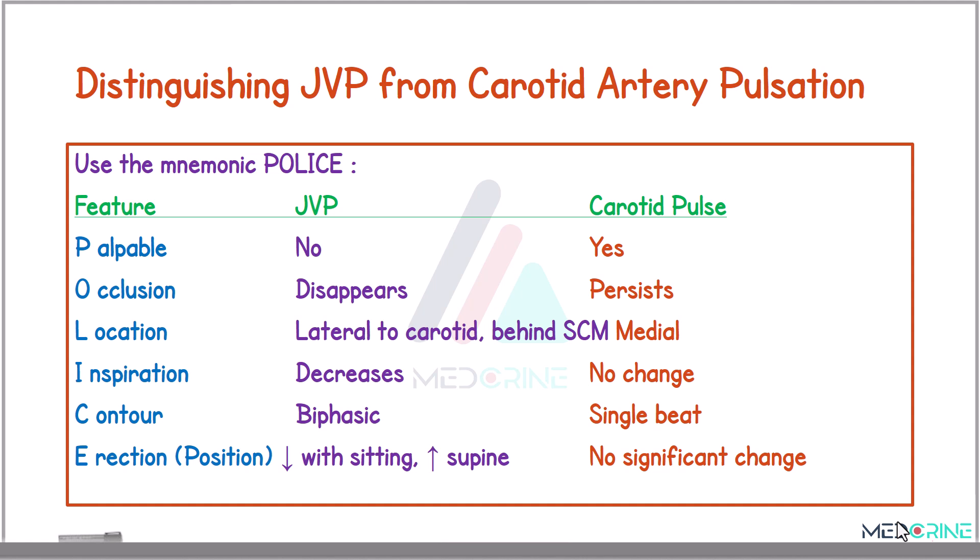For jugular venous pressure, we are not able to palpate it, however we can palpate a carotid pulse. On occlusion, the JVP disappears but persists in a carotid pulse. The location of JVP is lateral to the carotid, behind the sternocleidomastoid muscle, while the carotid pulse is medial. During inspiration, the jugular venous pressure decreases, however there is no change in the carotid pulse. The contour is biphasic in JVP and has a single beat in the carotid pulse.